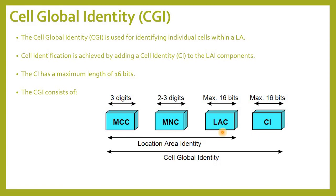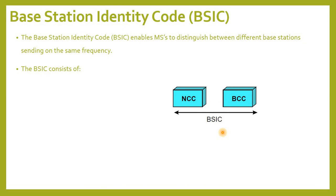Base Station Identity Code — BSIC. The BSIC enables Mobile Stations (MSs) to distinguish between different base stations sending on the same frequency. The BSIC consists of: NCC — Network Color Code, 3 bits, identifies the PLMN — note that it does not uniquely identify the operator, and is primarily used to distinguish between operators on each side of a border; and BCC — Base Station Color Code, 3 bits, identifies the base station to help distinguish between Radio Base Stations (RBS) using the same control frequencies.